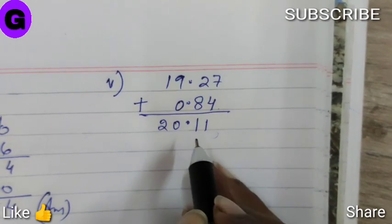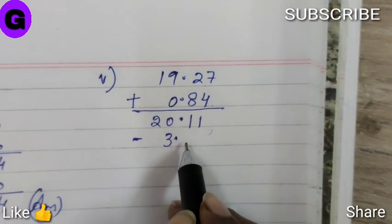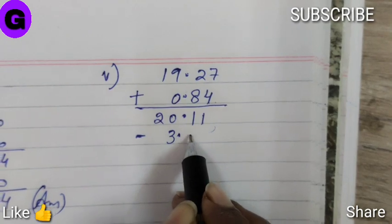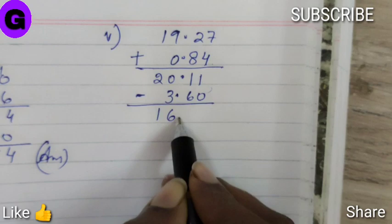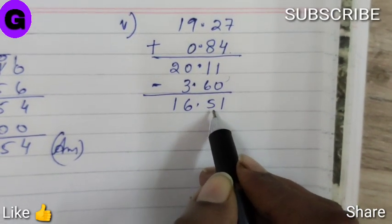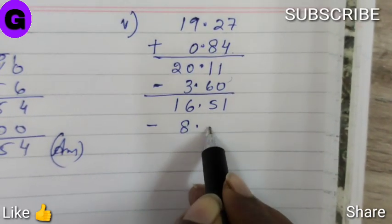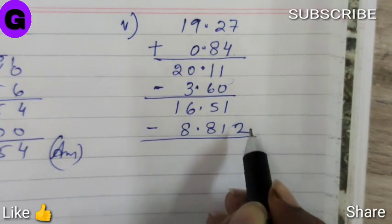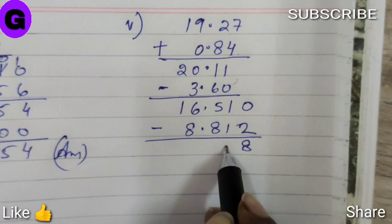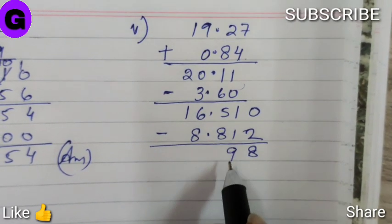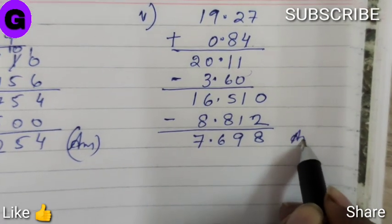Now from this answer we will subtract minus 3.6. We will get 16.51. Now from this answer we will further subtract 8.812. So we got the answer 7.698.